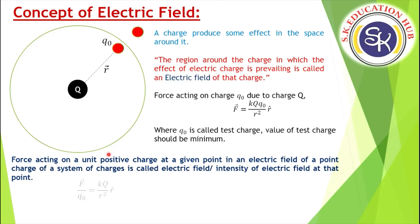So here, unit charge means we divide by charge. Force divided by charge — that is force divided by q0 — equals kQ divided by r squared times r-hat. And this is what we call the electric field. This was your basic conceptual understanding of the electric field.